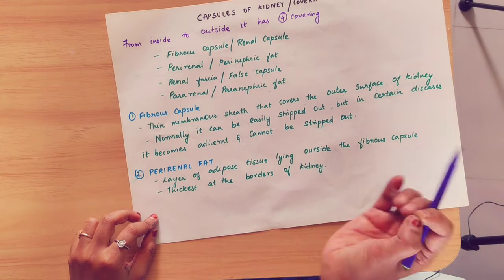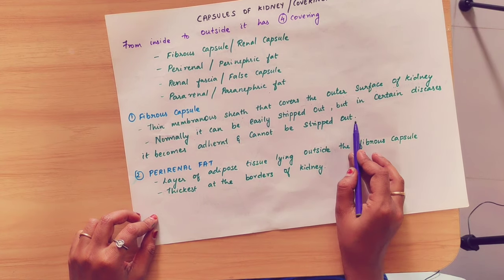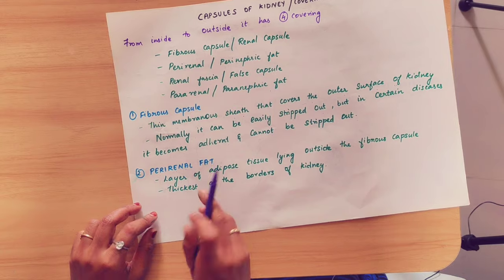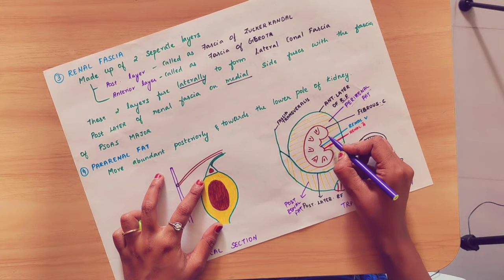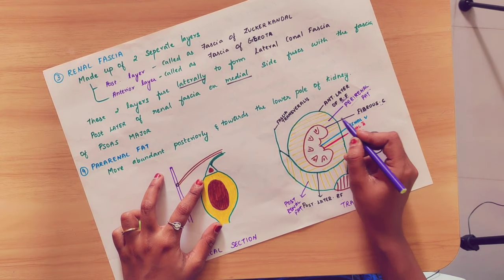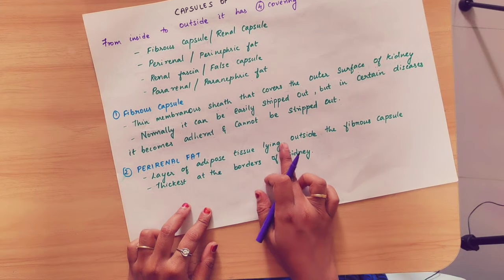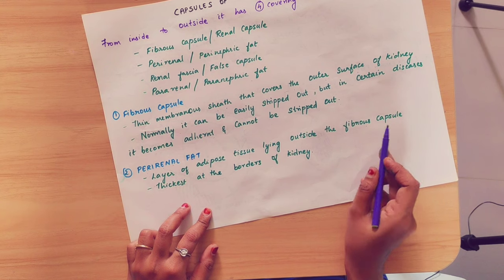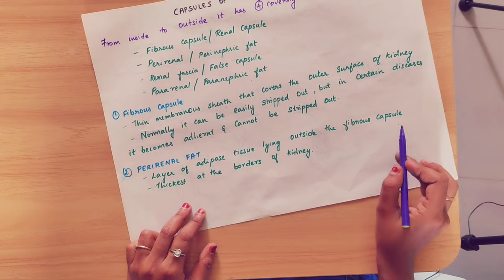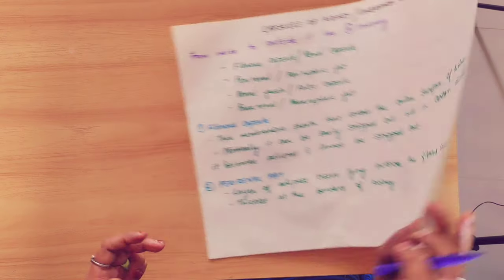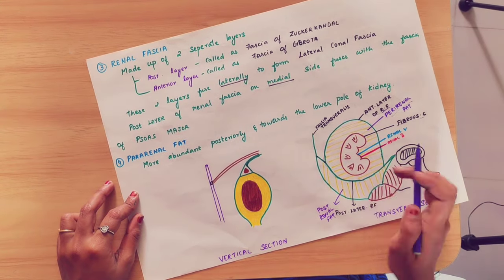The second layer is the perirenal fat. It is a layer of adipose tissue lying outside the fibrous capsule. This layer is thickest at the borders of the kidney — the lateral border and the medial border.